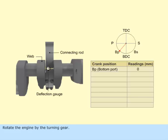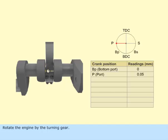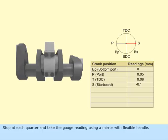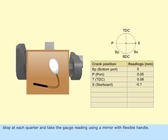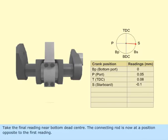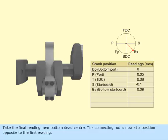Rotate the engine by the turning gear. Stop at each quarter and take the gauge reading using a mirror with flexible handle. Take the final reading near bottom dead center. The connecting rod is now at a position opposite to the first reading.